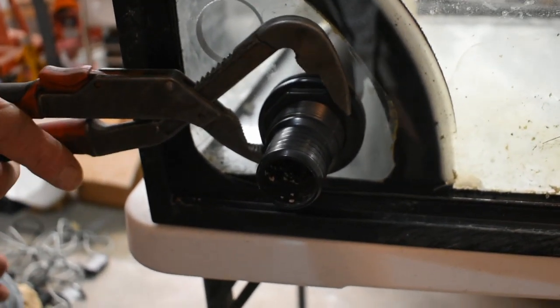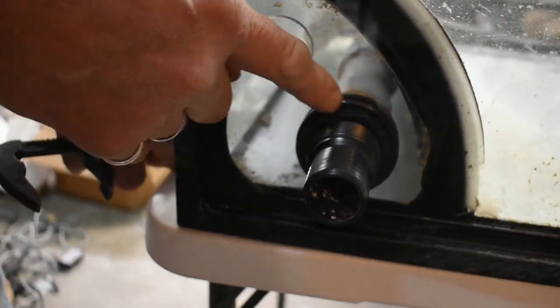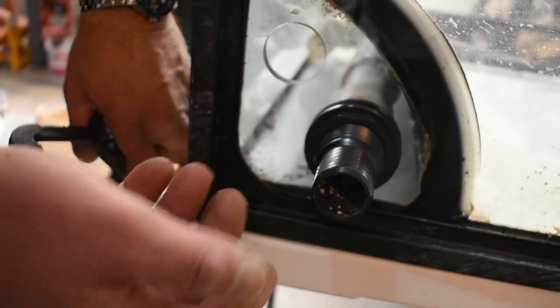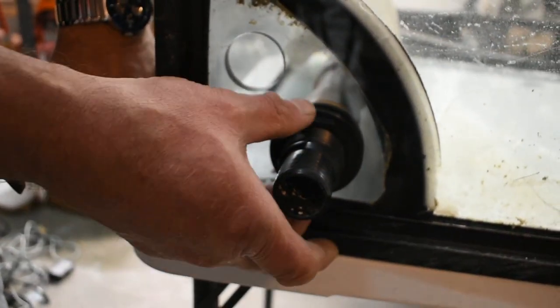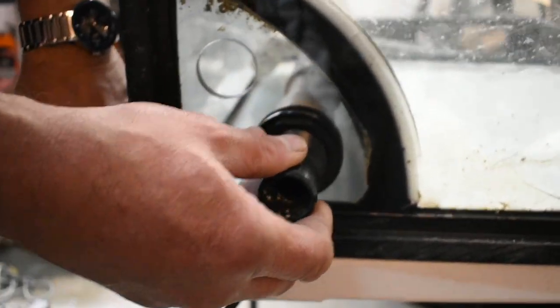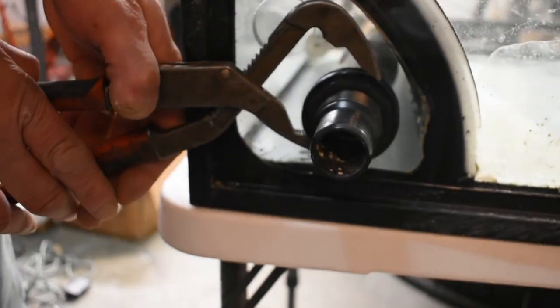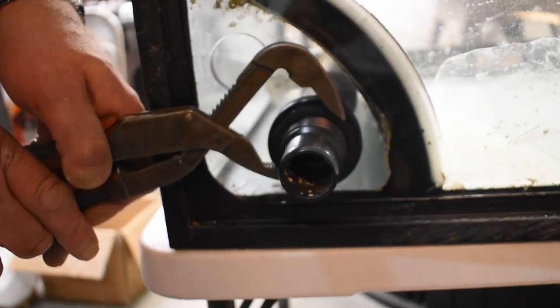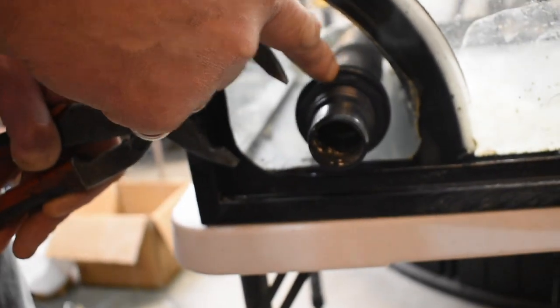With a set of channel locks - there are actually wrenches that fit these really well if you can come by one - but we don't want that so tight that it's crushing the seal. We just want it putting a good amount of tension on the seal. Also, when you're using tools on these you need to be very cautious because I could easily twist this enough to break it. It's just a piece of plastic.